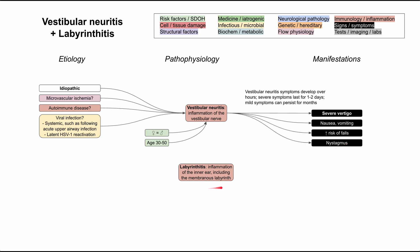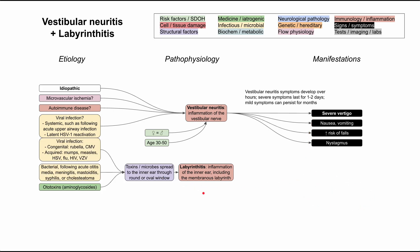Next, let's discuss labyrinthitis, which is inflammation of the inner ear, most prominently the membranous labyrinth. The etiology of labyrinthitis is better established. We have directly linked some viral infections to labyrinthitis, and this is the most common cause. You can have congenital viruses like rubella or cytomegalovirus acquired through the birth canal. You can also have acquired viral labyrinthitis through the mumps virus, measles virus, herpes simplex, influenza, HIV, and varicella zoster virus.